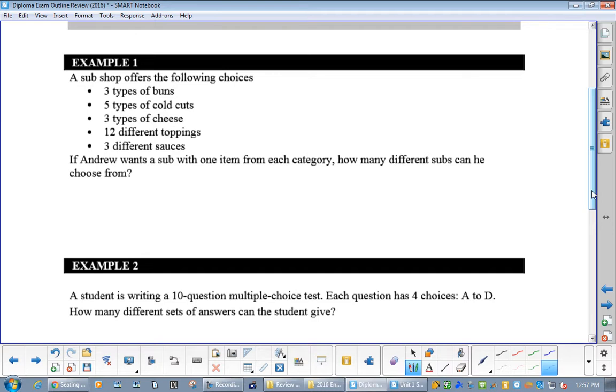All you have to do is multiply them together. Three times five times three times twelve times three, and you get 1,620. I just got those numbers from there.